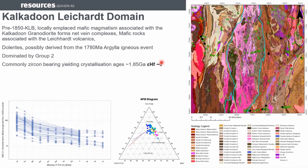They all came out at around 1780 Ma, and they have epsilon hafnium values of around zero. We don't have any ages from these mafic rocks that directly indicate 1780, and the field relationships are complex, but the rare earth geochemistry indicates it's quite similar to what we see at 1780 anyway.